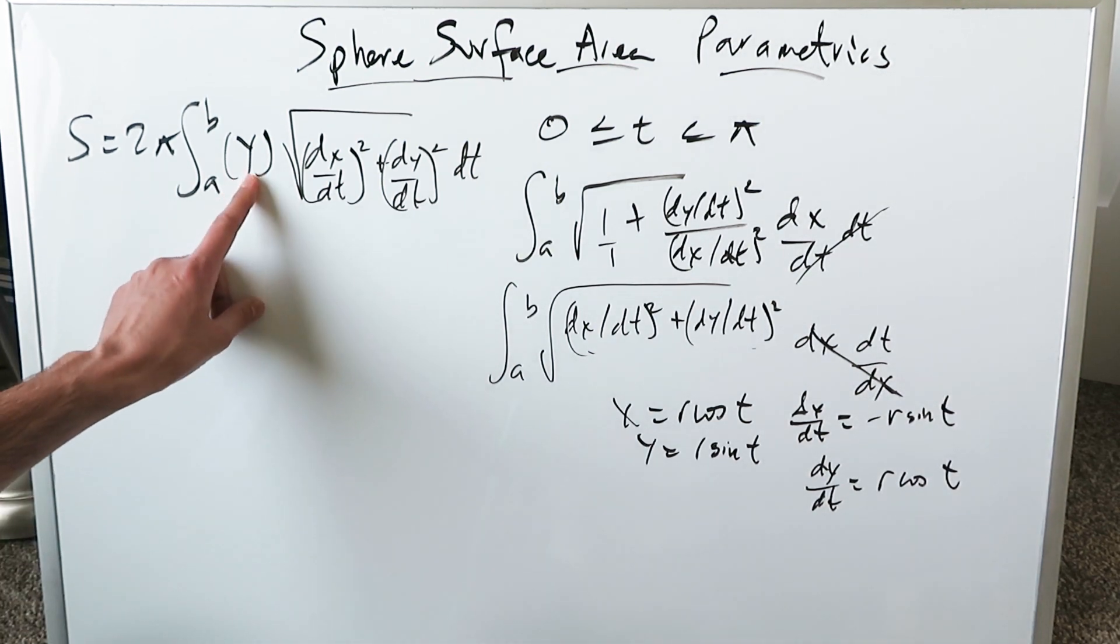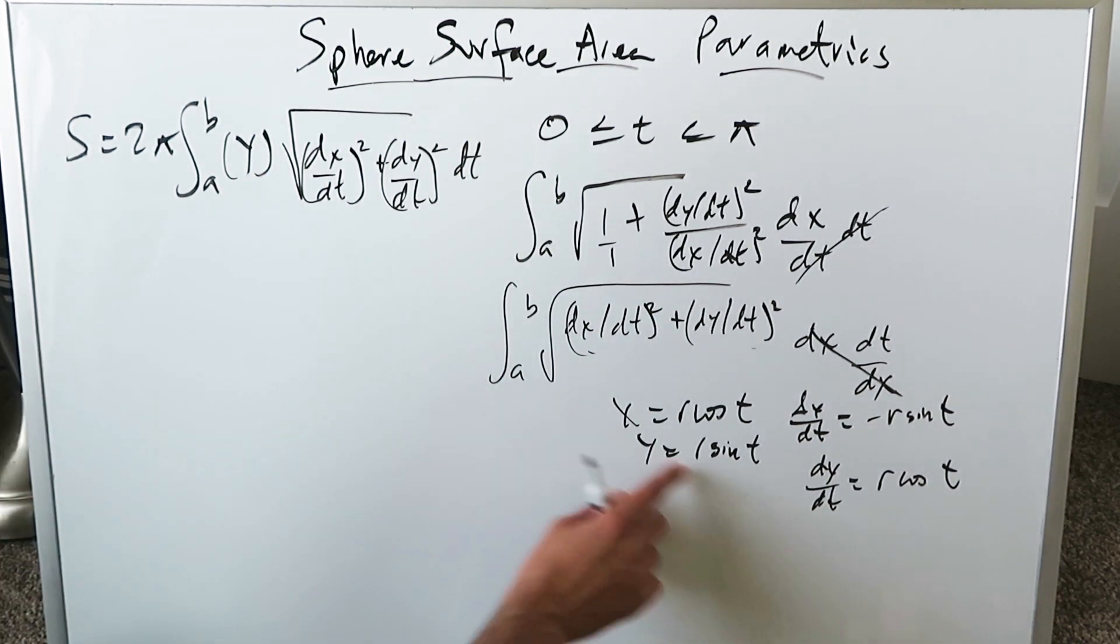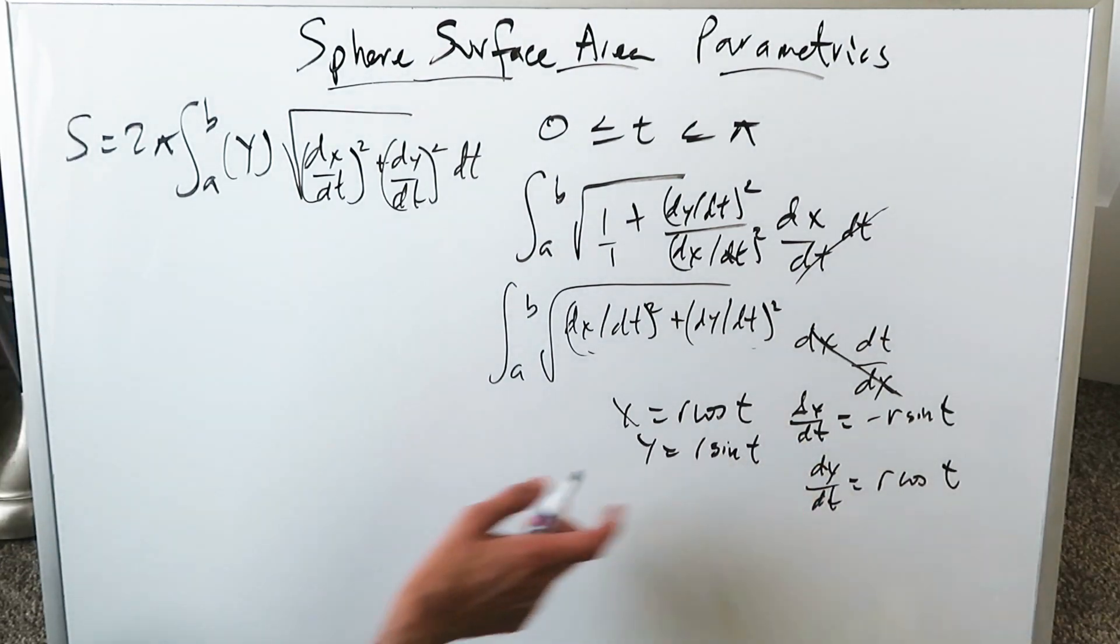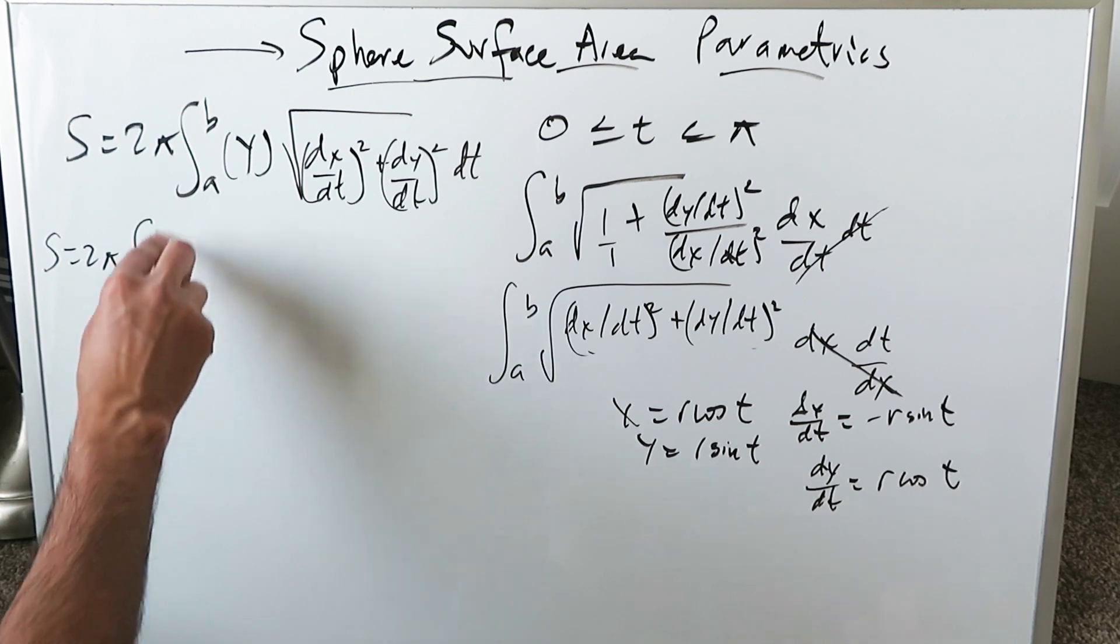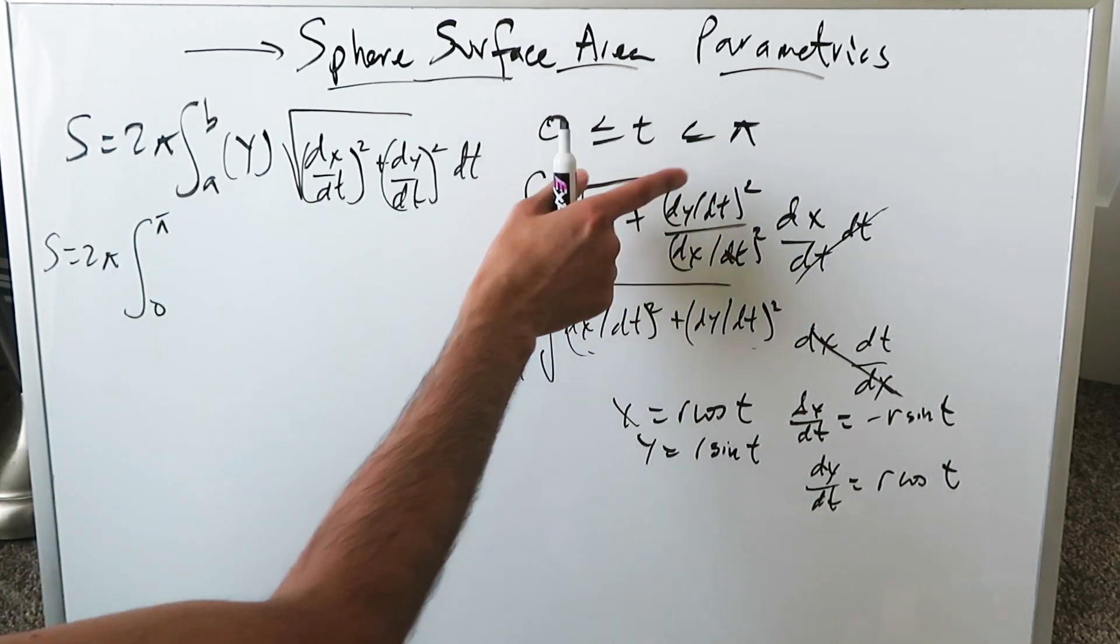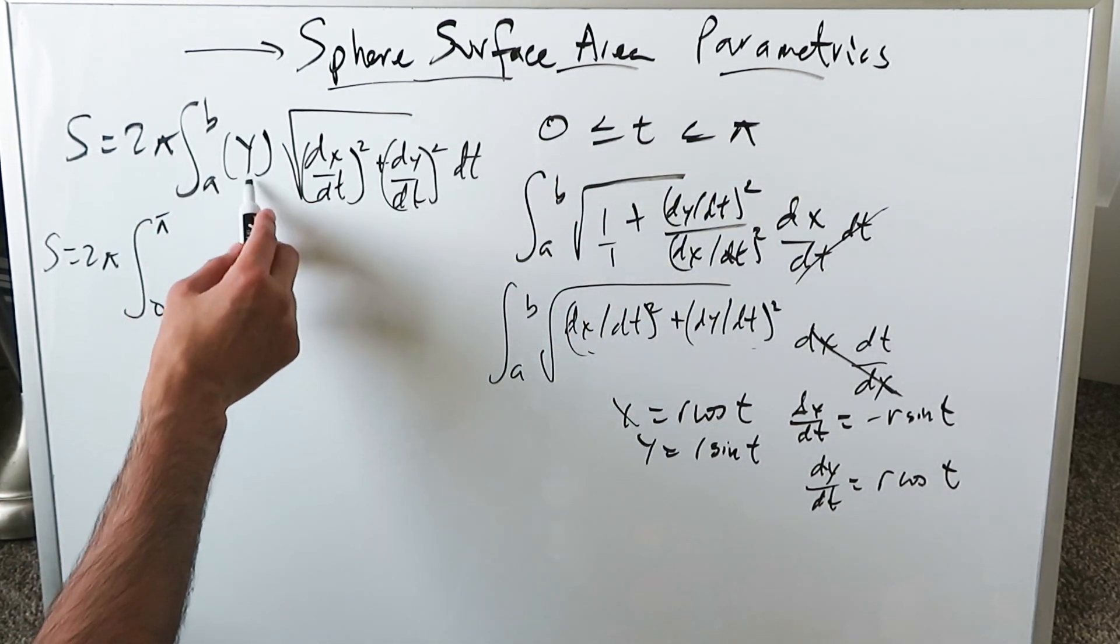That's what it's going to be in here. y will be exactly what this is right here. dx/dt will be exactly the values you see here. So the formula and the integral which will give us the surface area of sphere is from 0 to π because we've limited the domain from 0 to π. We have a y.